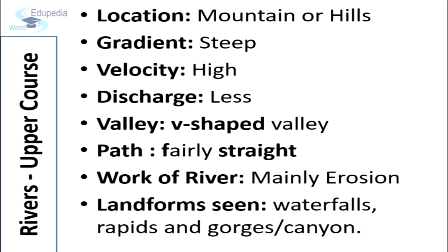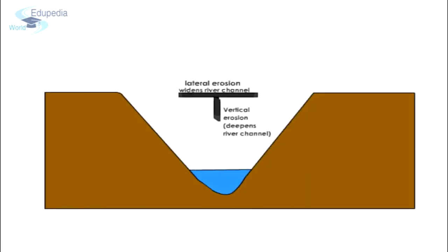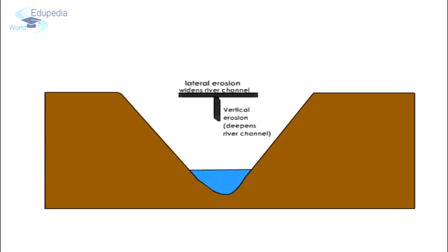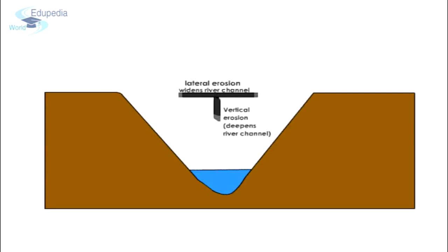Some of the landforms which we can see in the upper course of the river are waterfalls, rapids, gorges, canyons, etc. Since the river is flowing very swiftly, the predominant action is vertical erosion. The valley developed is thus deep, narrow, and distinctively V-shaped. Downcutting takes place so rapidly that lateral erosion cannot keep pace.